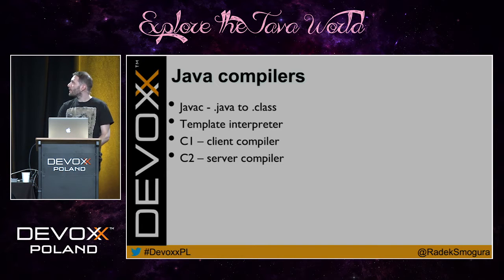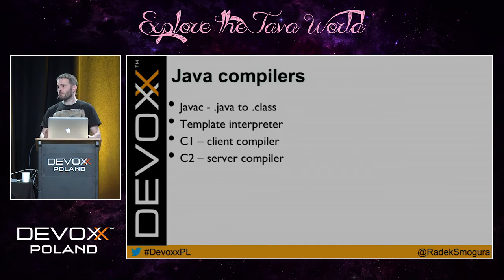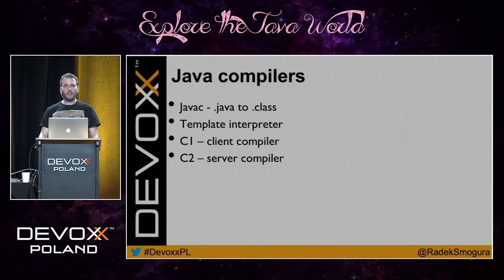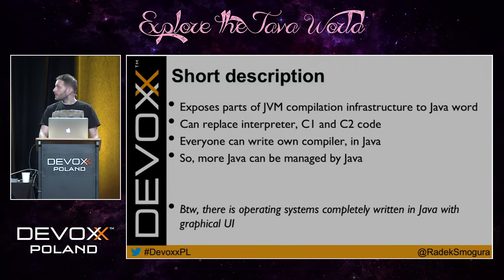As an introduction, in Java we have four compilers. Java C, which is a source-to-bytecode compiler. There is a template interpreter which creates machine code, but very, very simple and not optimized. There is a C1 compiler — it's a client compiler. And C2, which is the server compiler, produces very, very good and fast code, but takes a lot of resources.